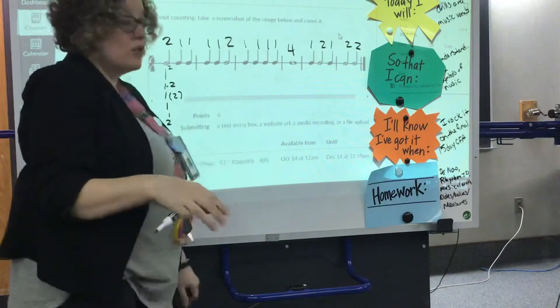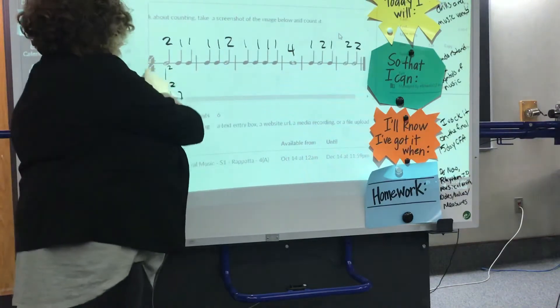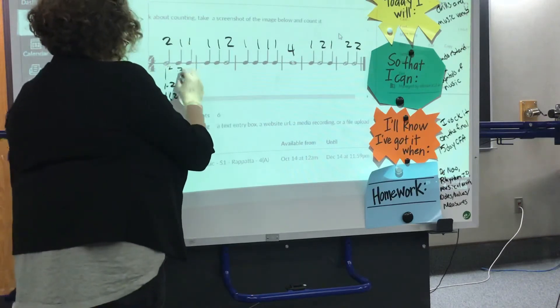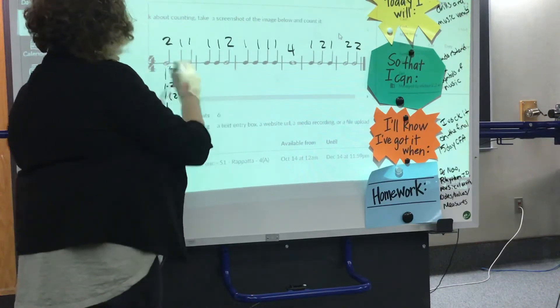Well, I've already used one and two, and because my time signature is four four, I know in each measure there's four beats. So I'm going to go one, two, three, four, because each of those are one.